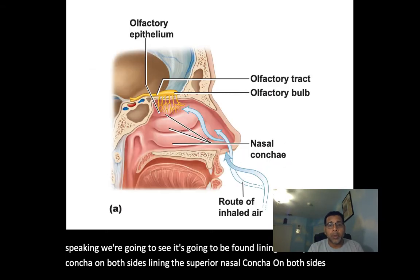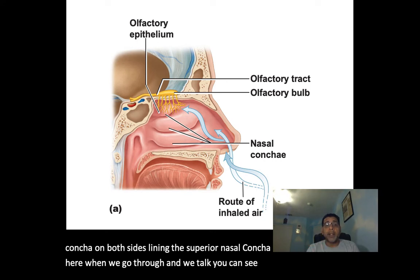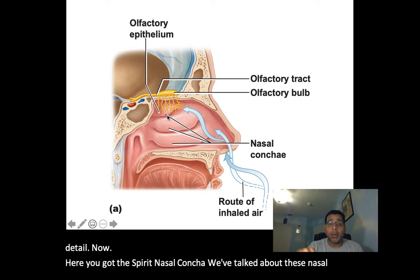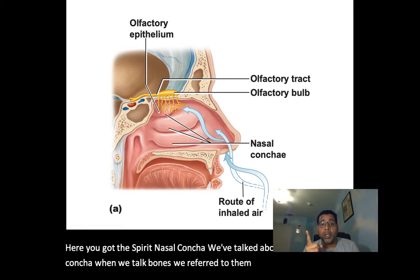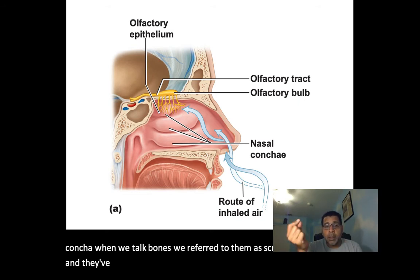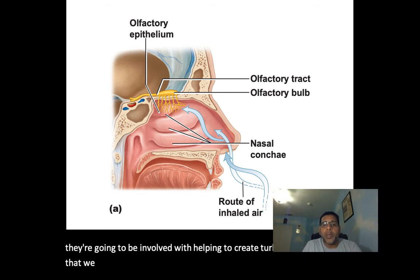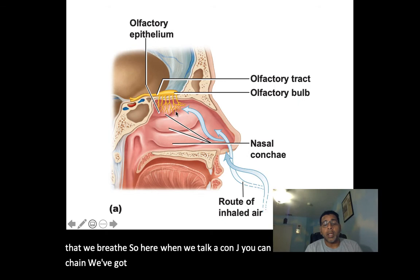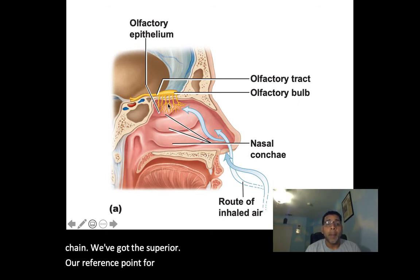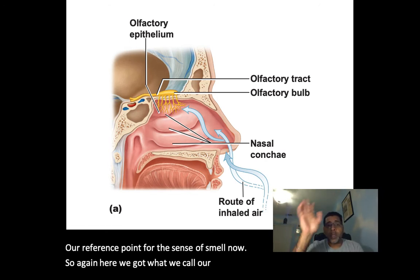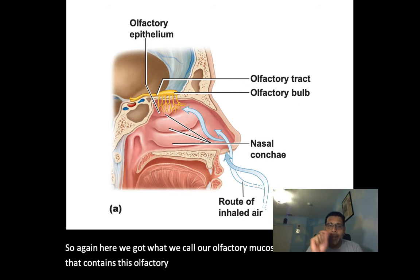You can see the superior nasal conchae in greater detail. We've talked about these nasal conchae as scroll-like structures with meatuses — little canal-like passageways underneath — involved with creating turbulence in the air we breathe. The olfactory mucosa contains the olfactory epithelium.